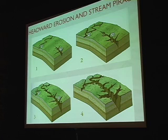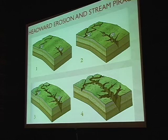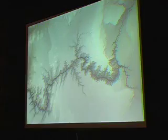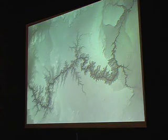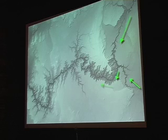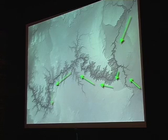In number three, the channel has actually broken through and captured river A. And finally, in number four, you can see a situation like we have today in the Grand Canyon. That's how headward erosion works. Looking back at our digital elevation map, after the headward erosion and stream piracy, we created a drainage that now flowed in the direction of the arrows, progressively going downstream into the Grand Wash Cliffs.